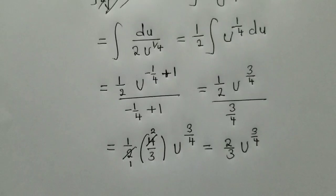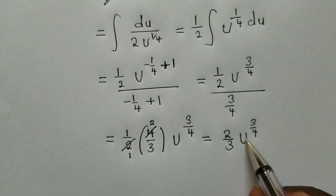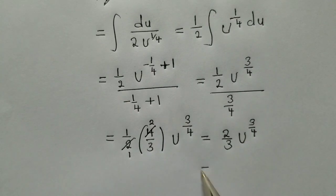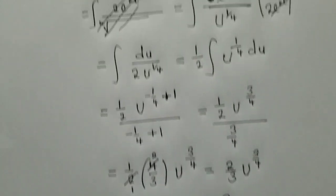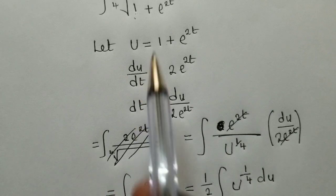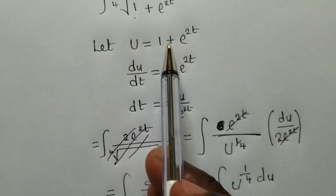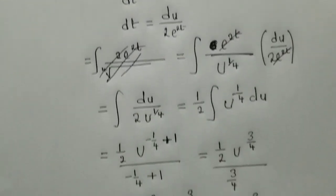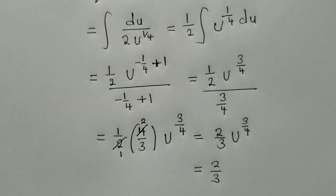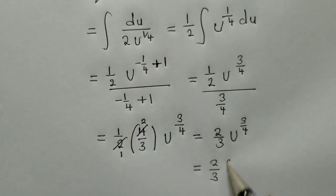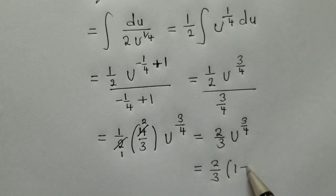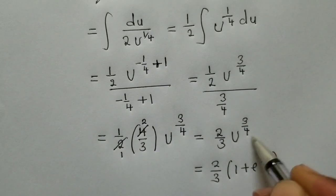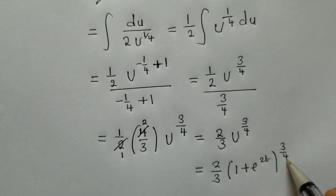So now, we can substitute back our u. Remember we said, let u be equal to 1 here. Let u be equal to 1 plus e power 2t there. So we're going to put our u, or we substitute back our u, which is 1 plus e 2t. And the power there, 3 over 4.